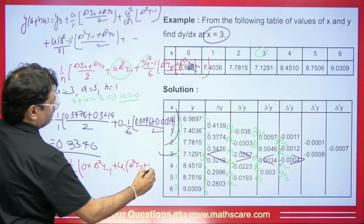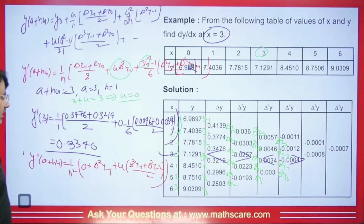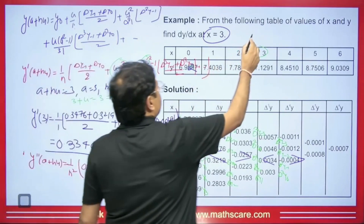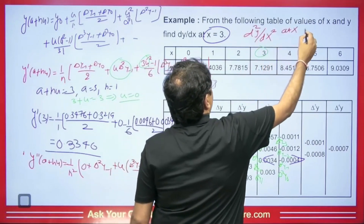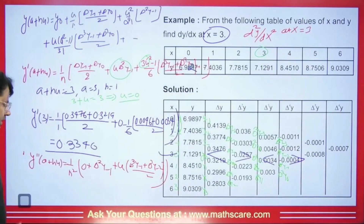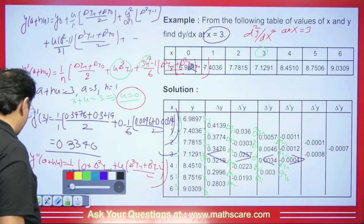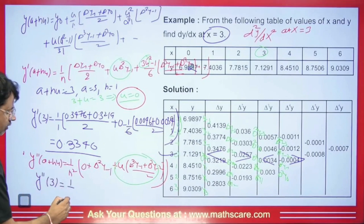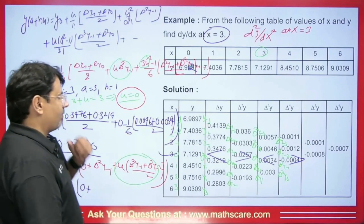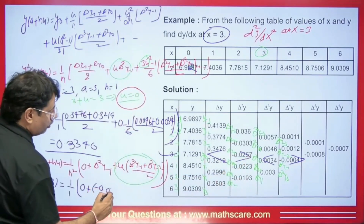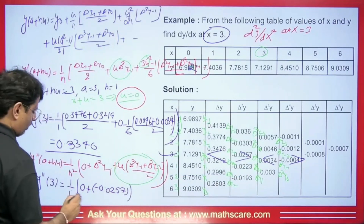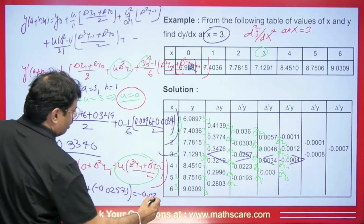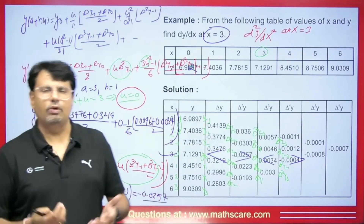So for the second-order derivative at X = 3 with U = 0, the U-containing terms vanish. We get Y''(3) = (1/H²)·Δ²Y₋₁. With H = 1, this is just Δ²Y₋₁ = −0.0257. Dividing by 1² gives the answer: −0.0257. This is how we find the double-order derivative.